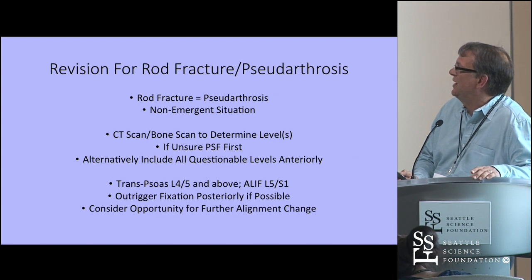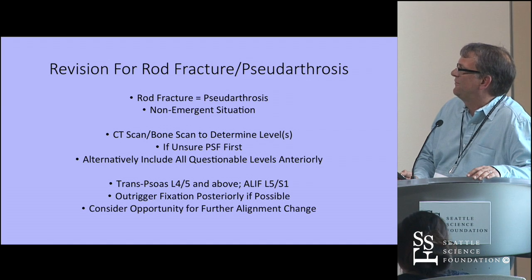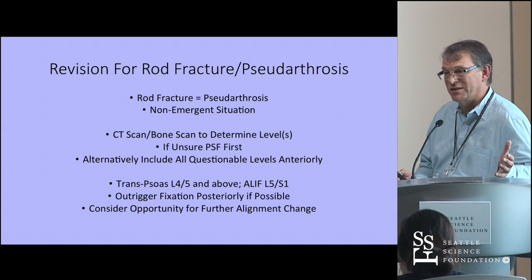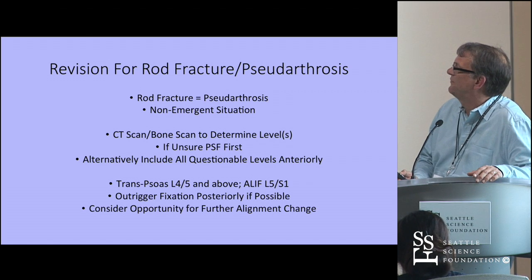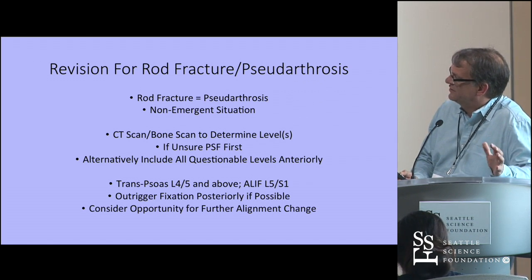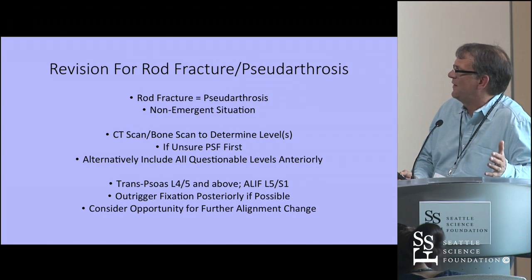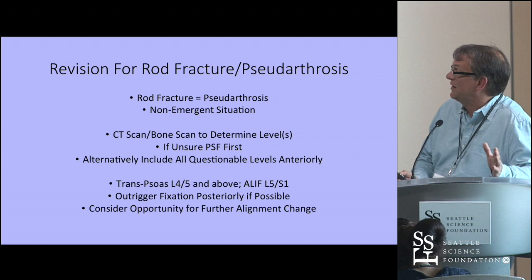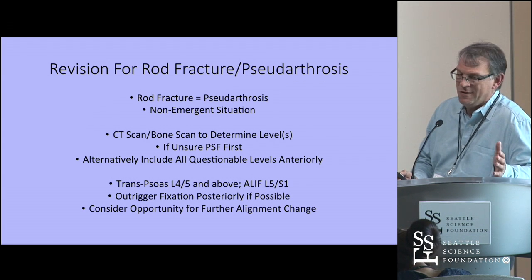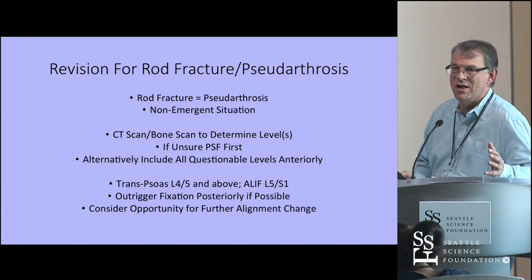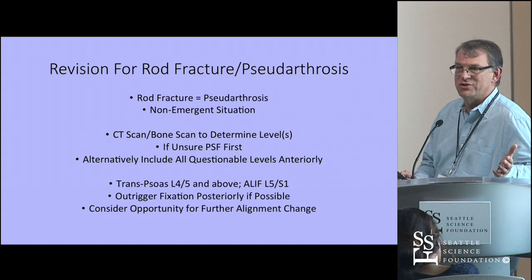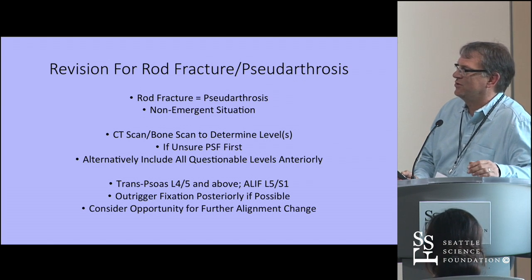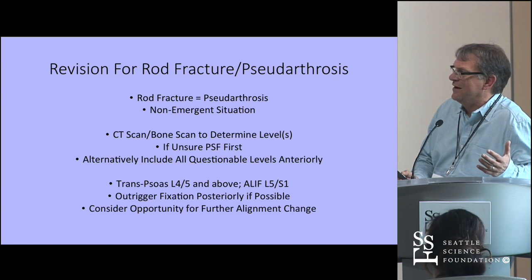Radiographic workup typically includes a CT scan and sometimes a bone scan, with the goal of determining which levels are not fully fused. Going from the back first allows mechanical testing of various segments to determine fusion status. Alternatively, if only a couple of levels are uncertain, both can be addressed via an anterior approach first followed by posterior. Typically a combined anterior and posterior approach is used — posterior fixation must be revised, and accessing the interbody space is more likely to achieve fusion given the compromised posterior bone and scarring from the prior surgery.